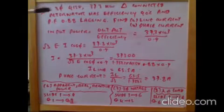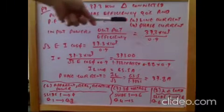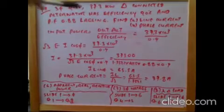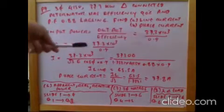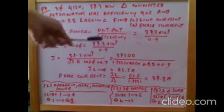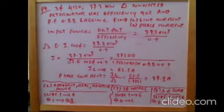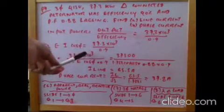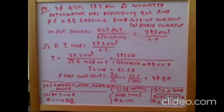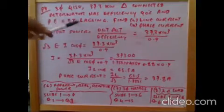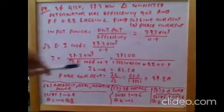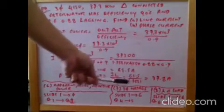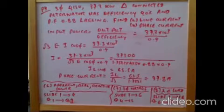Three-phase system: 415 V, 37.3 kW, delta-connected, 90% efficiency, power factor 0.8 lagging. Find line current and phase current. Input power = output / efficiency = 37.3 × 10³ / 0.9. Then, input power = root 3 × E × I × cos φ, rearranging: I = power / (root 3 × E × cos φ). With root 3 = 1.732, E = 415 V, cos φ = 0.88, line current = 65.5 A. Phase current = 65.5 / 1.732 = 37.8 A.